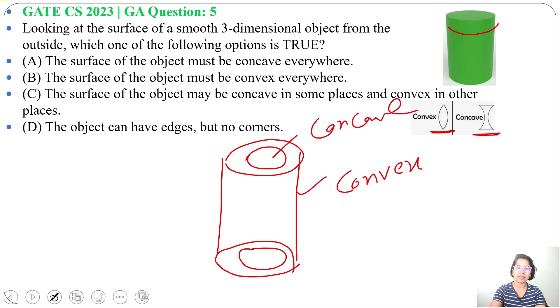Option A: the surface of the object must be concave everywhere. This is false. By just looking outside, we cannot say the surface must be concave everywhere. Option B: the surface of the object must be convex everywhere. This is also false.